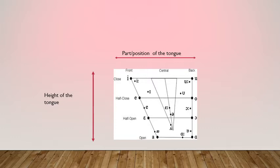Sometimes when you browse, you will find the labels as high, mid, and low — this is classified according to the American accent. But as we are dealing with the British accent, we classify it as close, half close, half open, and open. So there are three term labels: the part or position of the tongue, the height of the tongue, and the position of the lips — whether it is rounded or unrounded. The front vowels deal only with the front part of the diagram.